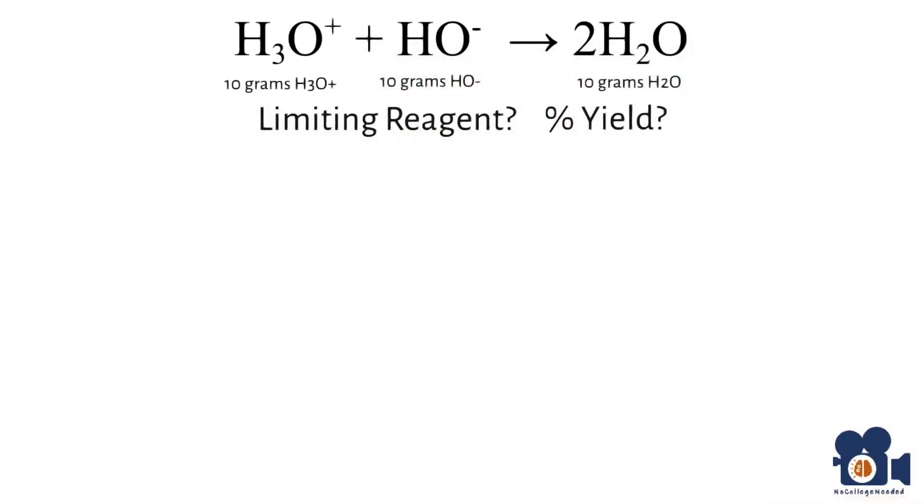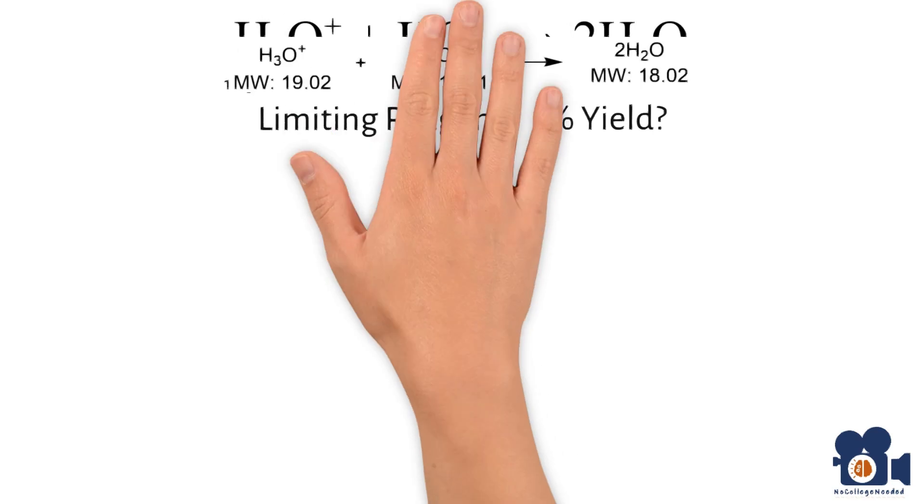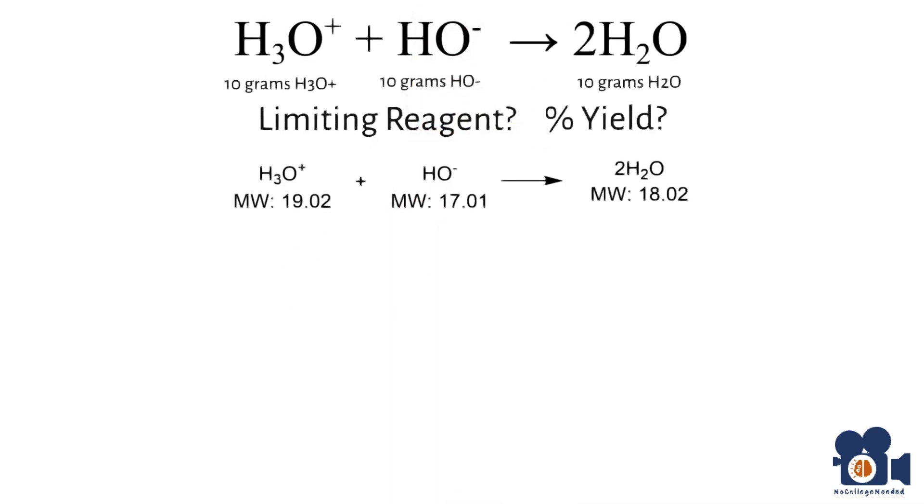The first step is to convert everything to moles. For this, you'll need the molecular weight of the chemicals. H₃O⁺, the molecular weight is 19.02 grams per mole. HO⁻ is 17.01 grams per mole, and H₂O is 18.02 grams per mole.